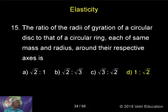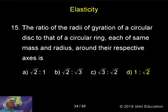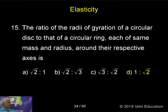The ratio of the radii of gyration of a circular disc to that of a circular ring, each of same mass and radius, about their respective axis is 1 is to root 2.